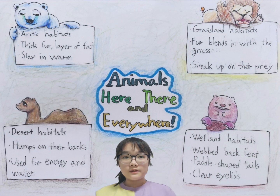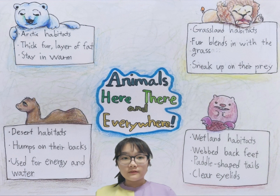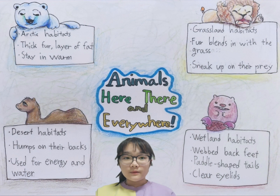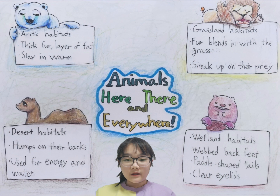Second is the grassland habitat. Grassland is full of tall grass. Lions live in grassland habitats. The color of lions' fur blends in with the grass, so they can sneak up on their prey.